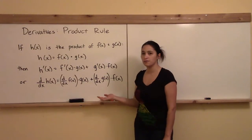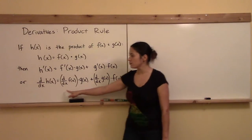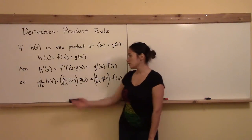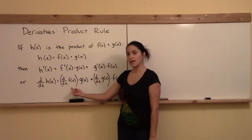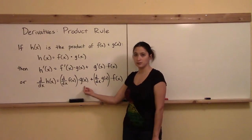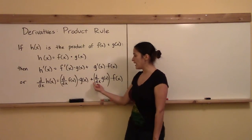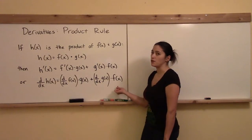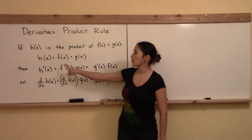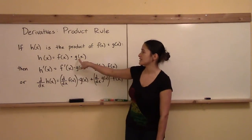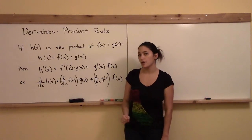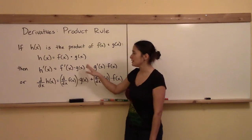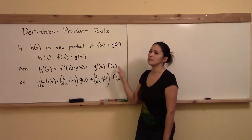Let's look at this again — I've written it in both forms. The d/dx is the same thing as the prime notation; it denotes the derivative. So the d/dx of h of x is df/dx times g — we leave g alone — then we add dg/dx and leave f of x alone. People often say: derivative of the first times the second, plus the derivative of the second times the first.